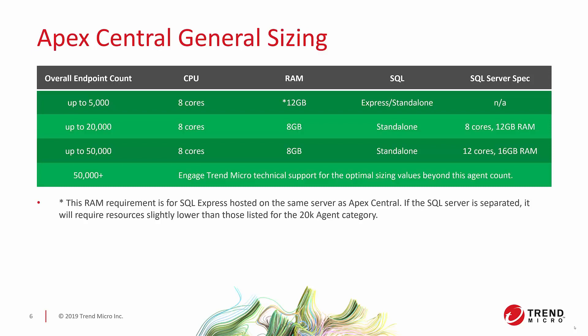If you need to go beyond 50,000 agents, we do have sizing for up to 200,000 agents. But at that scale, if you haven't already, engage Trend Micro technical support — we can give you optimal sizing values and discuss the different techniques we use to support very large numbers of agents.